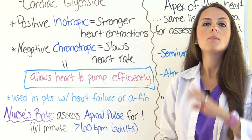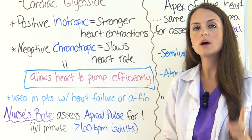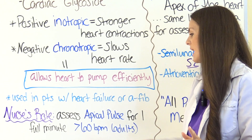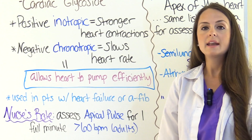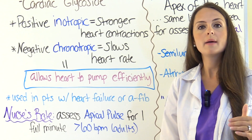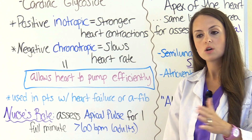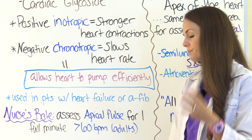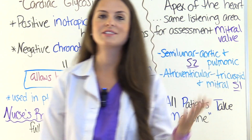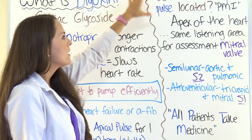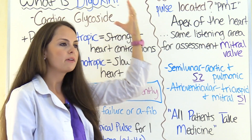As the nurse, prior to giving Digoxin, you always want to assess the apical pulse for one full minute. In adults, you want to make sure it's at least 60 beats or greater. The next question you want to ask yourself is: where is this apical pulse located?